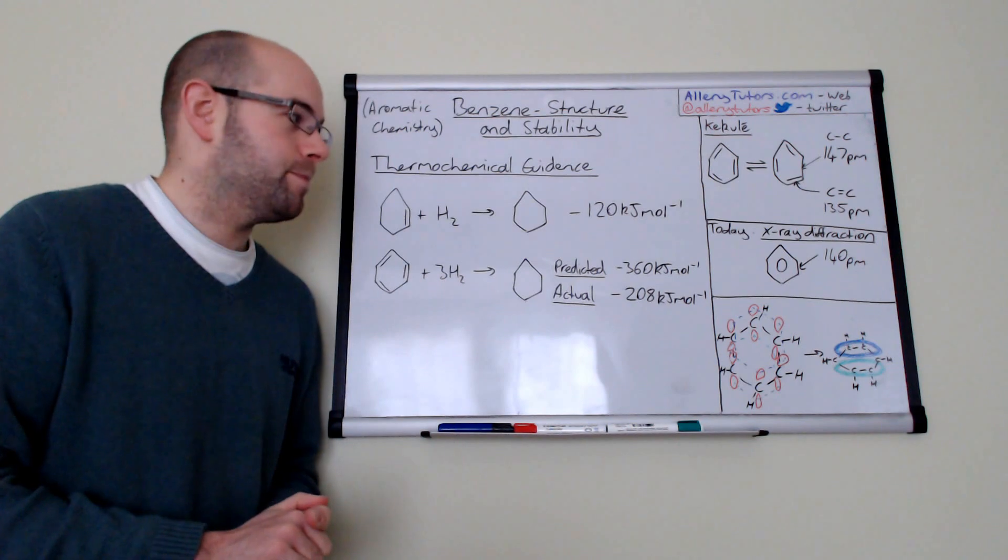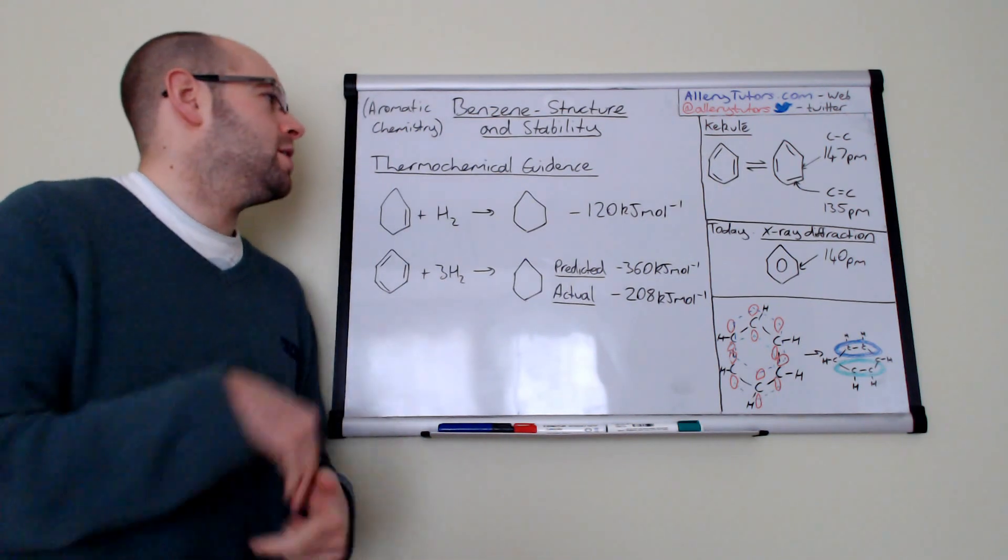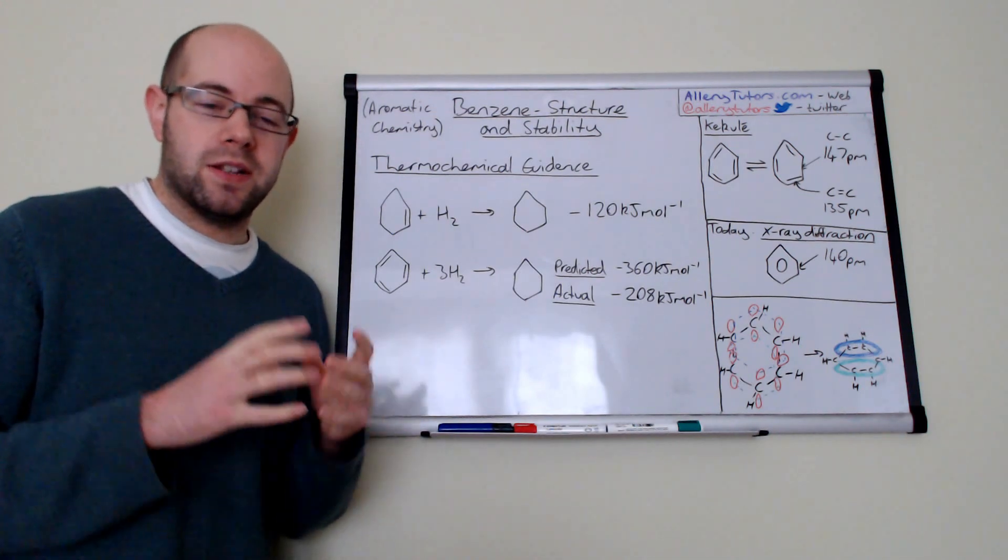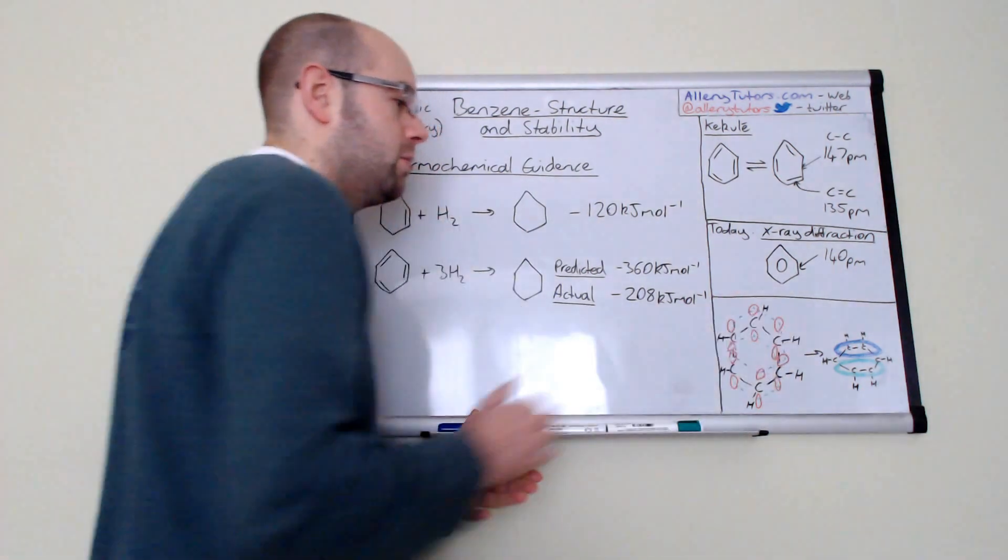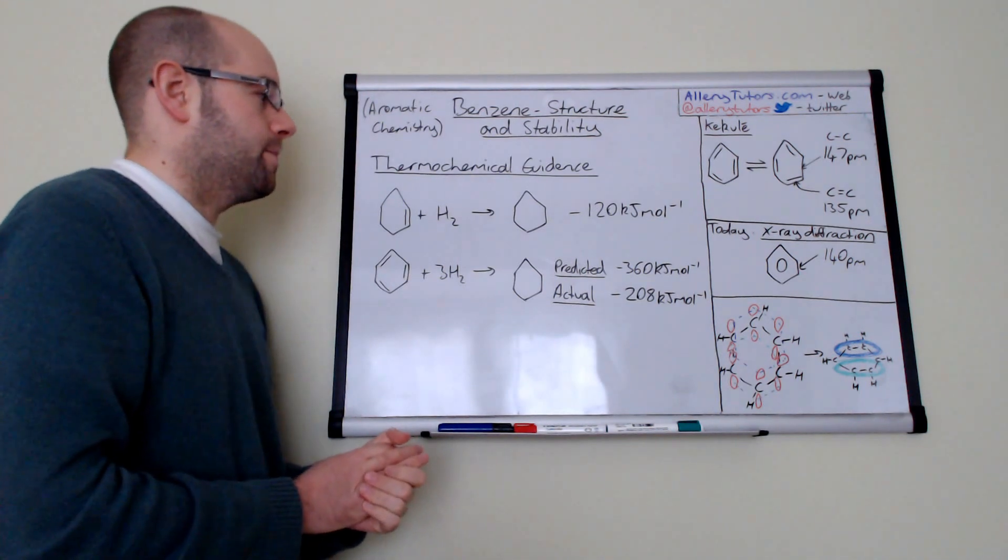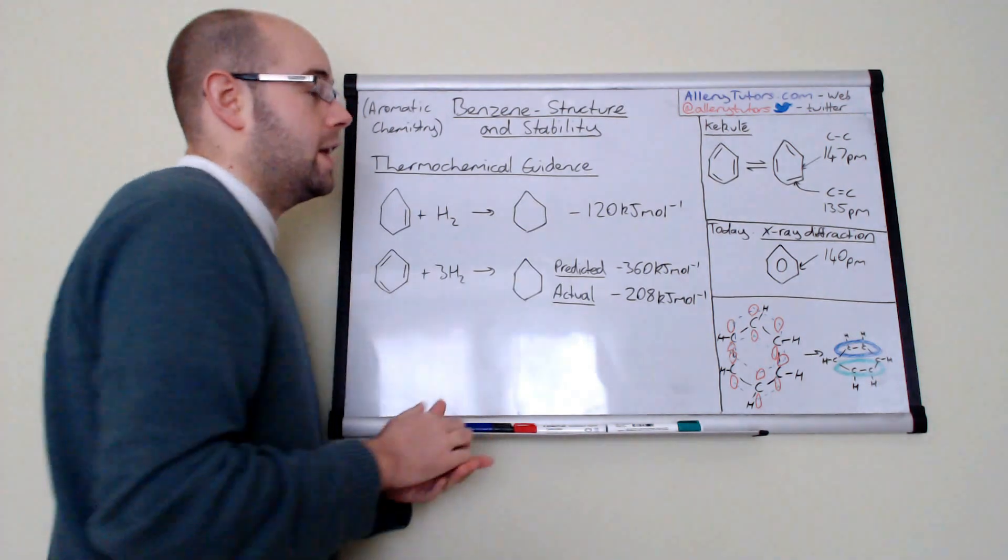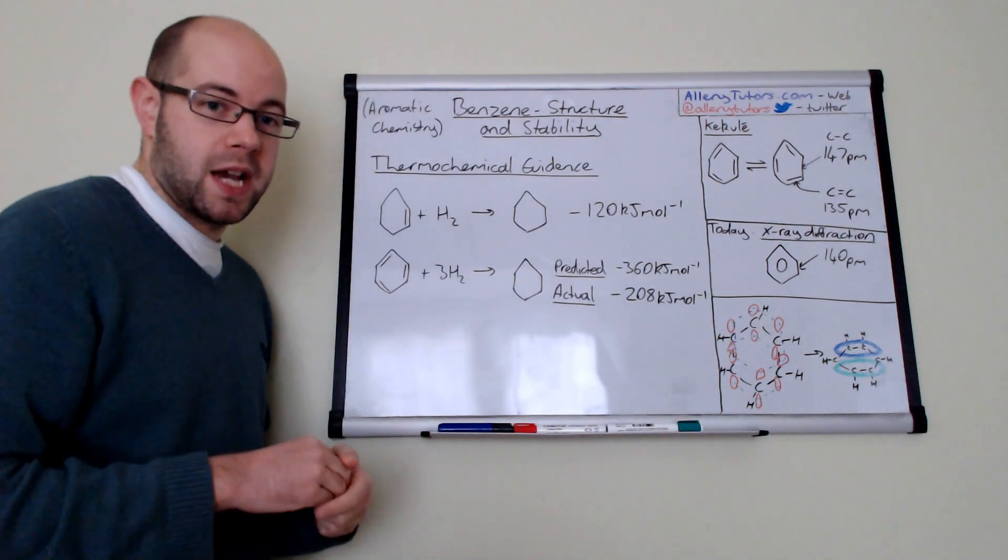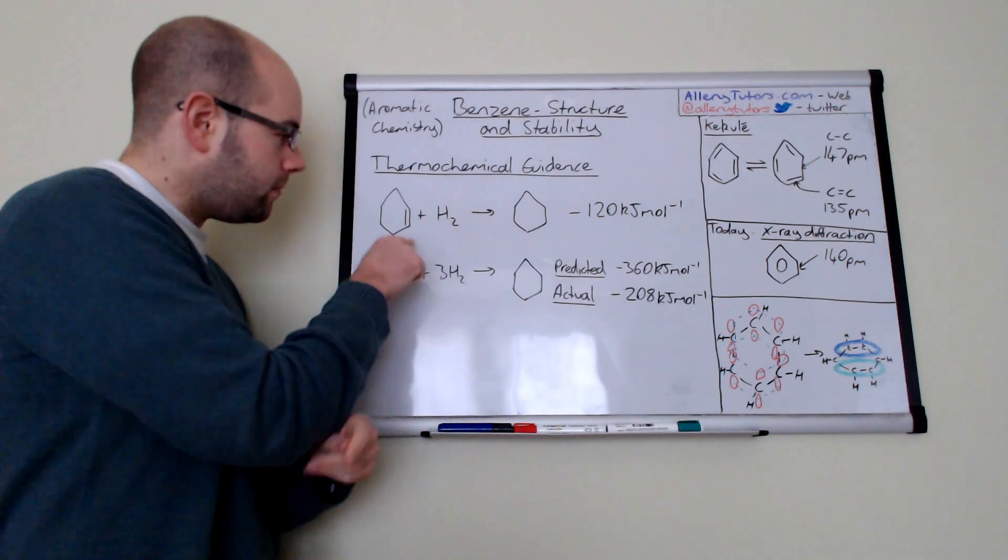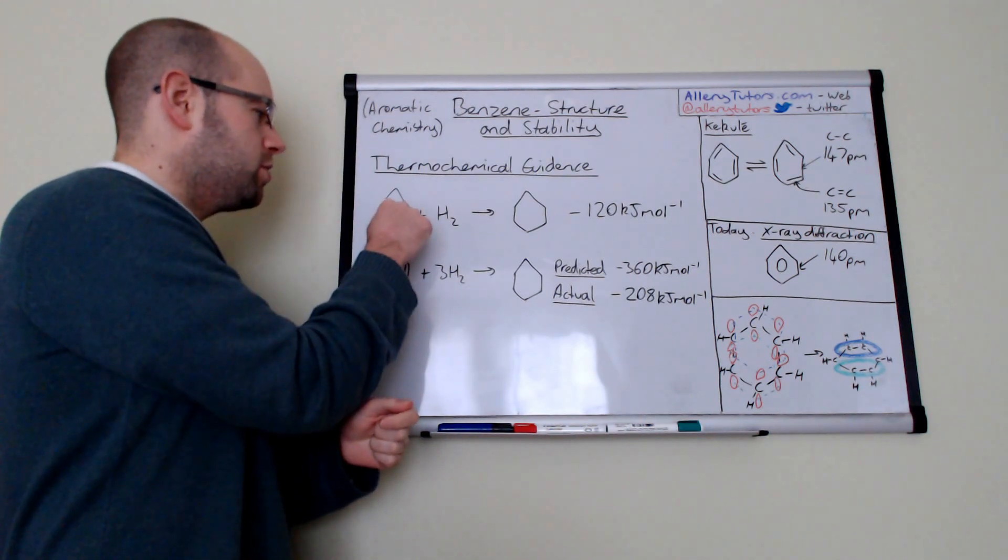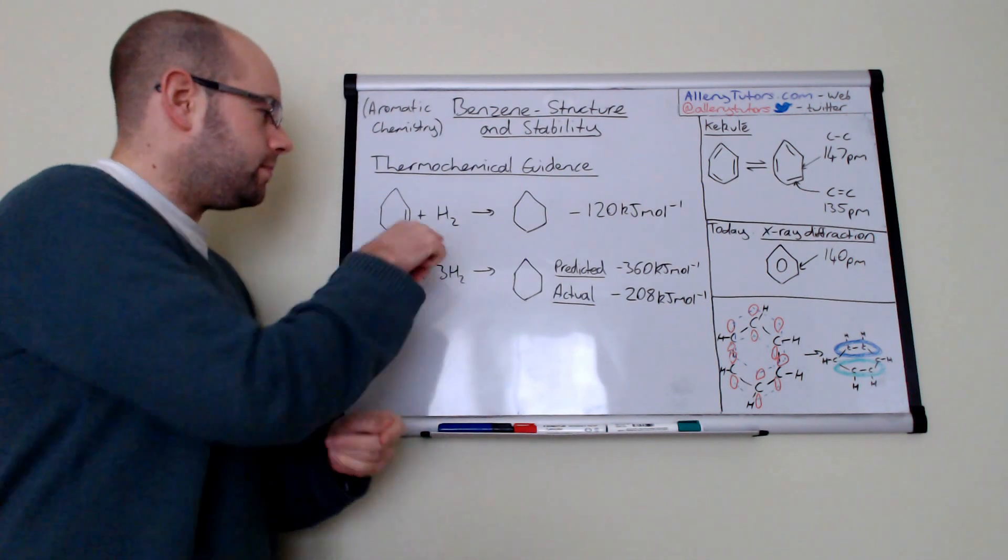One of the other evidence, one of the key bits of evidence as well is actually thermochemical evidence. This is proof, this is a method in which we can prove that the model was actually a delocalized system. Basically what we say is that we take Kekulé's model and we put it through some tests. If we take something like this one here which is cyclohexene, you can see we've got one double bond in there.